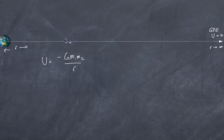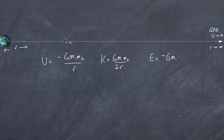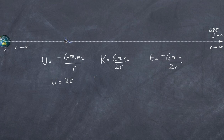To summarise: gravitational potential energy U equals negative Gm1m2 over r; kinetic energy KE equals positive Gm1m2 over 2r; and total energy E equals negative Gm1m2 over 2r. This means U equals twice the total energy, the total energy equals the negative of the kinetic energy, and two times the kinetic energy plus the gravitational potential energy equals zero.